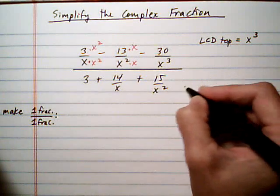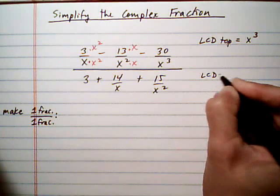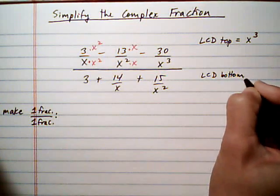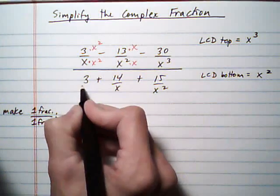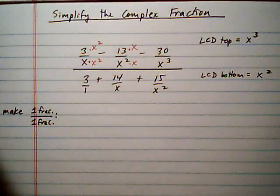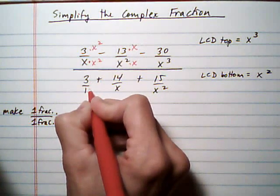We're also going to do the same for the bottom. We're going to find what is the LCD of the bottom. And the LCD of the bottom is x squared. Think of this guy over here as 3 over 1. So the first fraction here, 3 over 1, gets multiplied by x squared, top and bottom, to give it an x squared on the bottom.